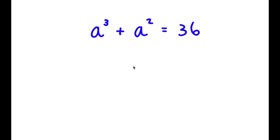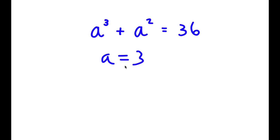In this problem, I have a to the power of 3 plus a squared equals 36. To find all solutions, I need to first find one solution by plugging in some numbers. Plugging in 1 gives 2, which is wrong. Plugging in 2 gives 12, which is wrong. Plugging in 3 gives 27 plus 9 equals 36, which works. So a equals 3 is one solution.